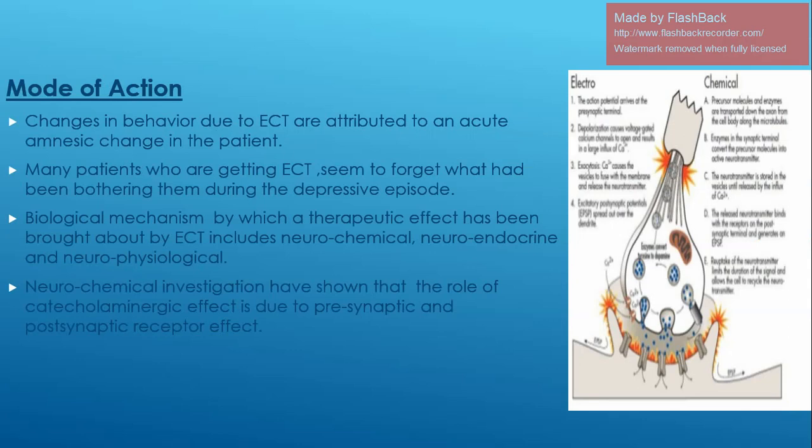Regarding the mode of action: changes in behavior due to ECT are attributed to acute amnesic changes in the patient. Many patients receiving ECT seem to forget what had been bothering them during depressive episodes. Biological mechanisms by which the rapid effect is brought about include neurochemical, neuroendocrine, and neurophysiological. Neurochemical investigations show the role of catecholaminergic effects at presynaptic and postsynaptic receptors. Action potentials arise at the presynaptic terminal, depolarization causes voltage-gated calcium channels to open, resulting in a large influx of calcium, which causes vesicles to fuse with the membrane and release neurotransmitter.